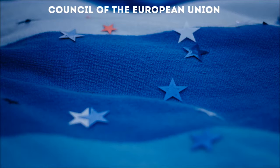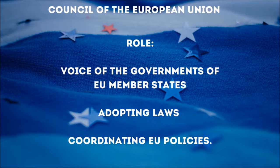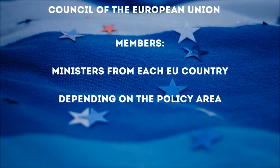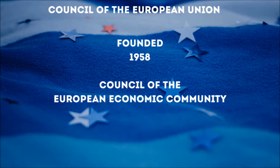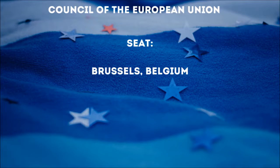The Council of the European Union. Its role is to be the voice of the governments of EU member states, adopting laws and coordinating EU policies. The members are ministers from each EU country, depending on the policy area. Each EU country alternately assumes the presidency for six months. It was founded in 1958, at that time as the Council of the European Economic Community. Its seat or location is in Brussels, Belgium.